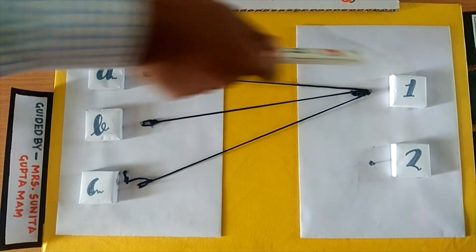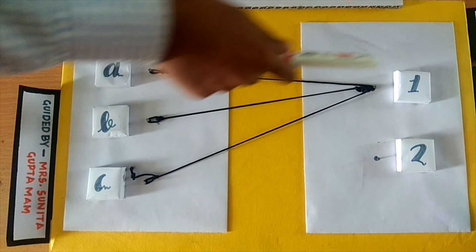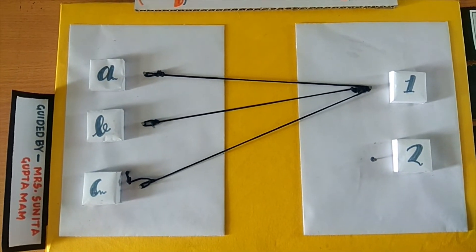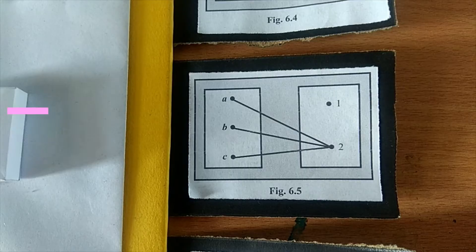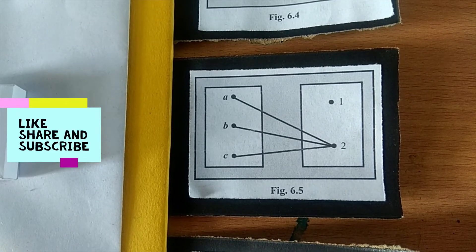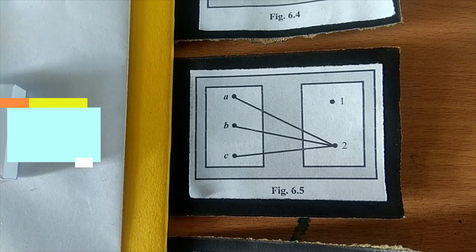pairs are A1, B1, C1. So each element of the first set has a unique image in the second set. So it is a function as shown in figure 6.5.